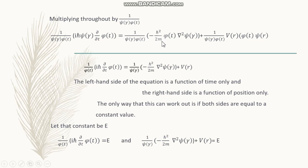From this equation we can see that the left part, after cancelling psi of r in the numerator and denominator, we are left with 1 over phi of t, i h-bar d phi by dt. Similarly the second term gives 1 over psi of r, minus h-bar squared by 2m del square psi r plus V of r.